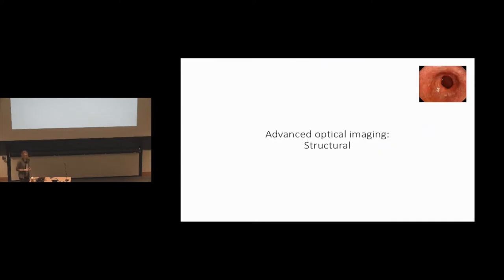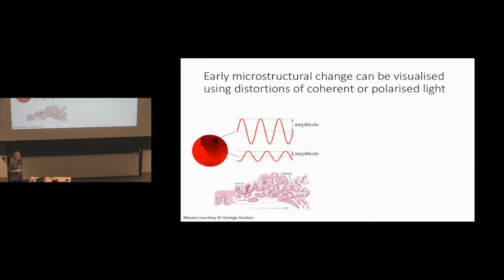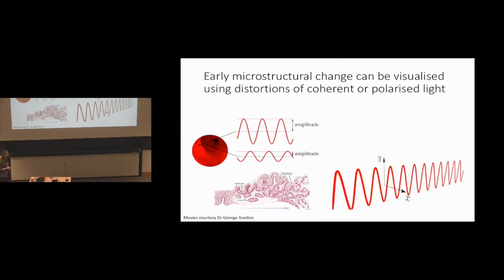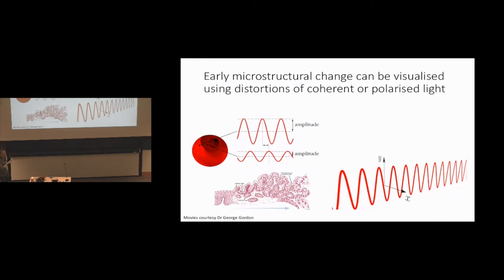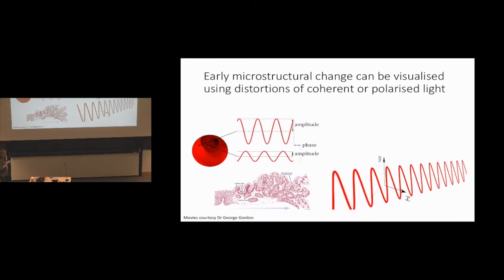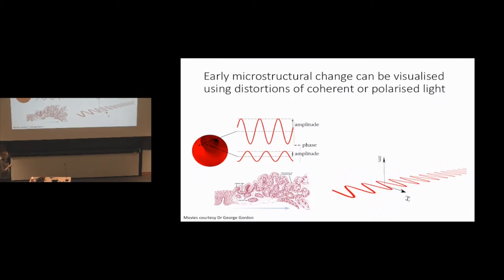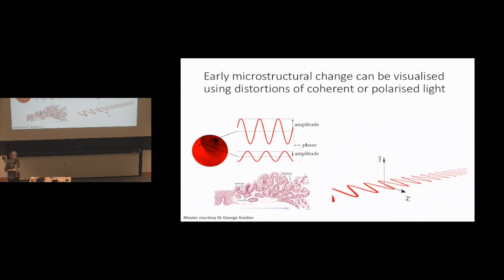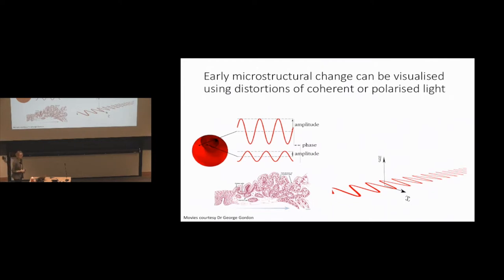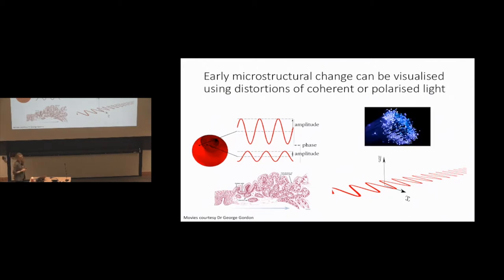Let's first think about structural imaging. The optical phase and polarization of light can be altered when it falls on tissue. We're looking at the potential of optical phase and polarization to be sensitive to early microstructural disorder. In the normal case of the esophageal lining, we've got a nice stratified epithelium, but as we go towards cancer, we end up in a rather disordered state. Both coherent light with a known phase and polarized light with a known orientation can be very quickly disrupted by interaction with normal tissue, and really severely disrupted by disordered tissue.